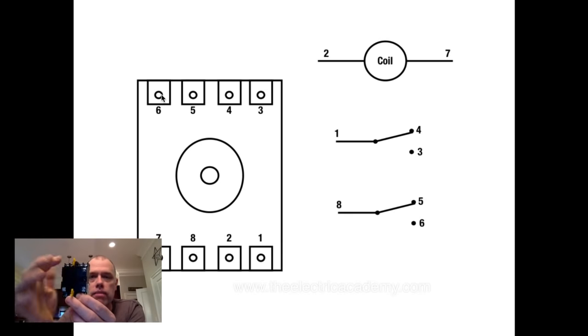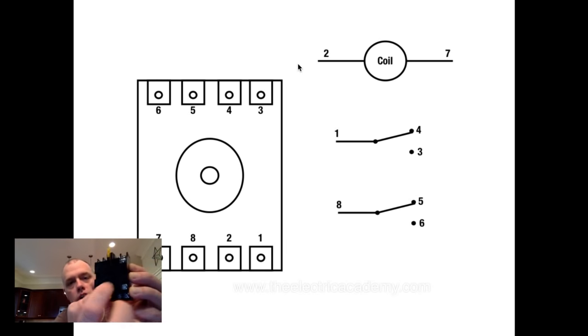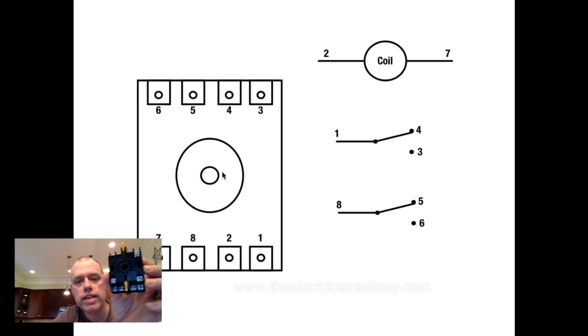It's a circular thing, but I have all these connection points along here. All those are our different points here. Now, if I look at this guy, if you look close, they're all numbered. 2 and 7, so this 2 here and this 7 here, that is my coil. So that's the power that energizes my coil. So that's important. We need to bring power there to have the magnet pull in.